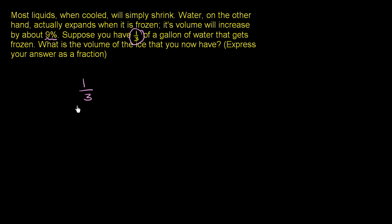So the new volume is going to be your existing volume. So this is the original volume, 1 third of a gallon. And it's going to expand by 9%. So your frozen volume is going to be your original volume plus 9% of your original volume. So plus 9% of your original volume. So you could say it's 9% times 1 third. So this right over here is going to be the expanded volume.